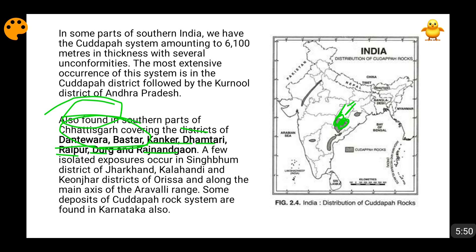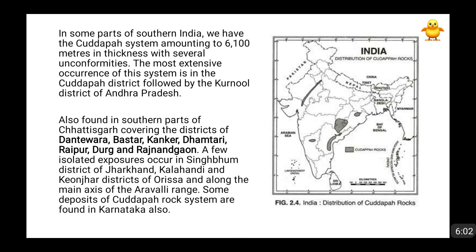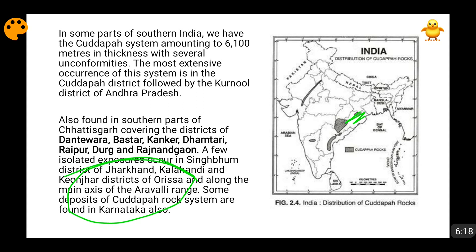Slight occurrences of these rocks are also found in Singhbhum in Jharkhand, indicated by the black spot on the map. They are also found in the Kalahandi and Keonjhar districts of Odisha. You can see the map of Odisha here. They are also found along the main axis of the Aravalli range — along this axis these Kudappa system rocks are also found.